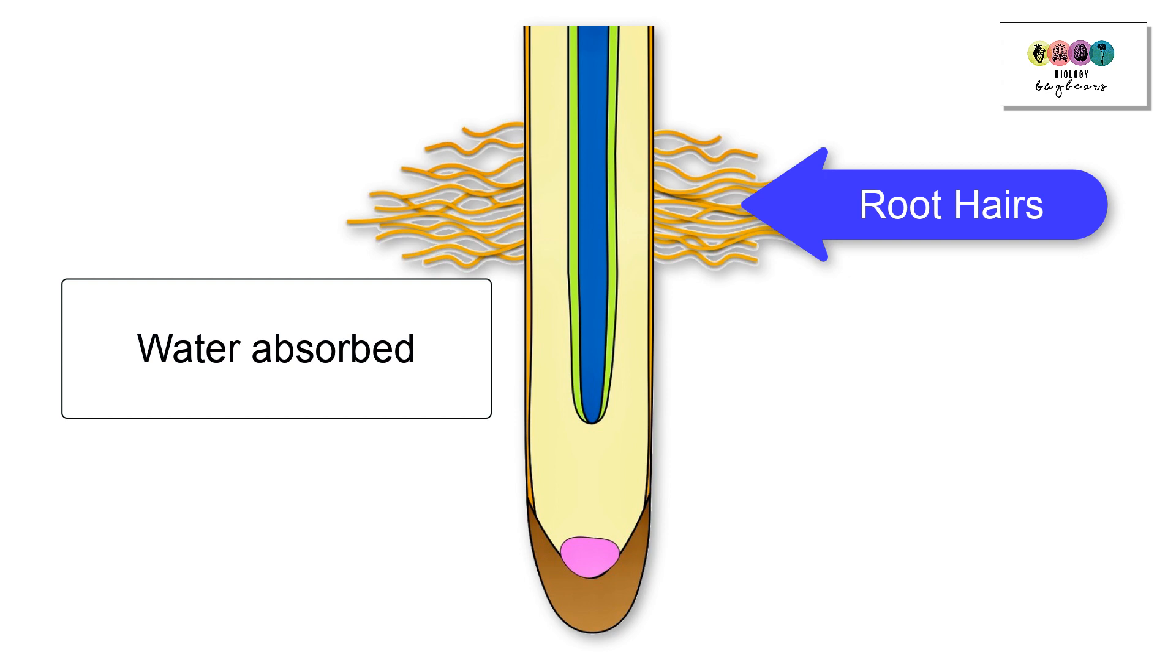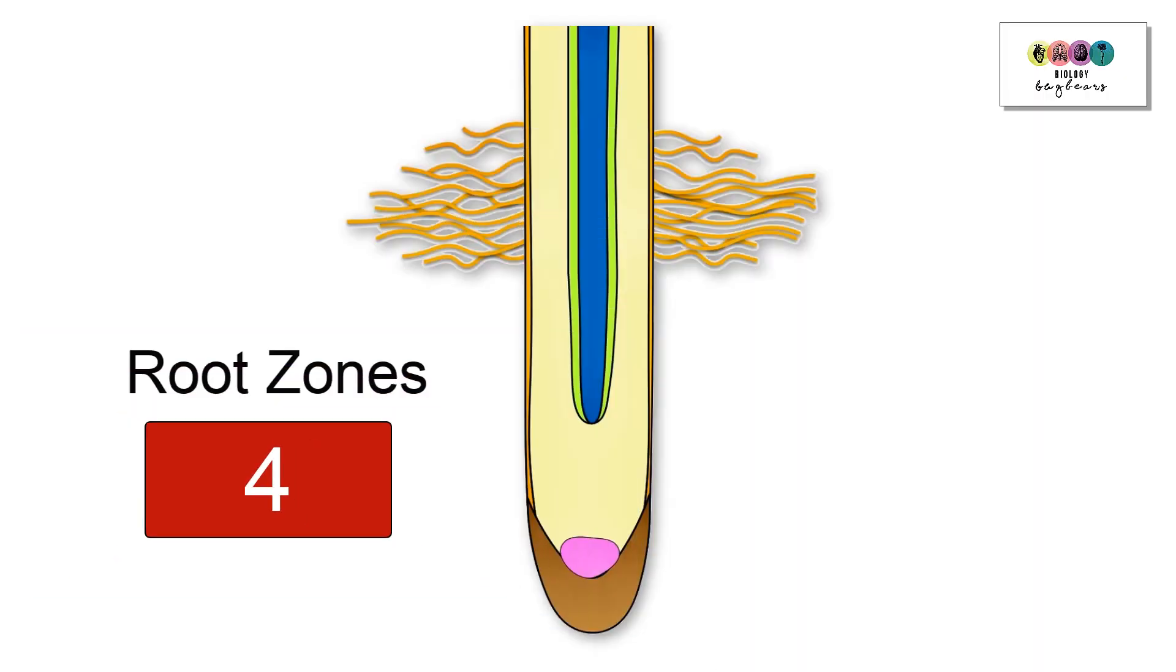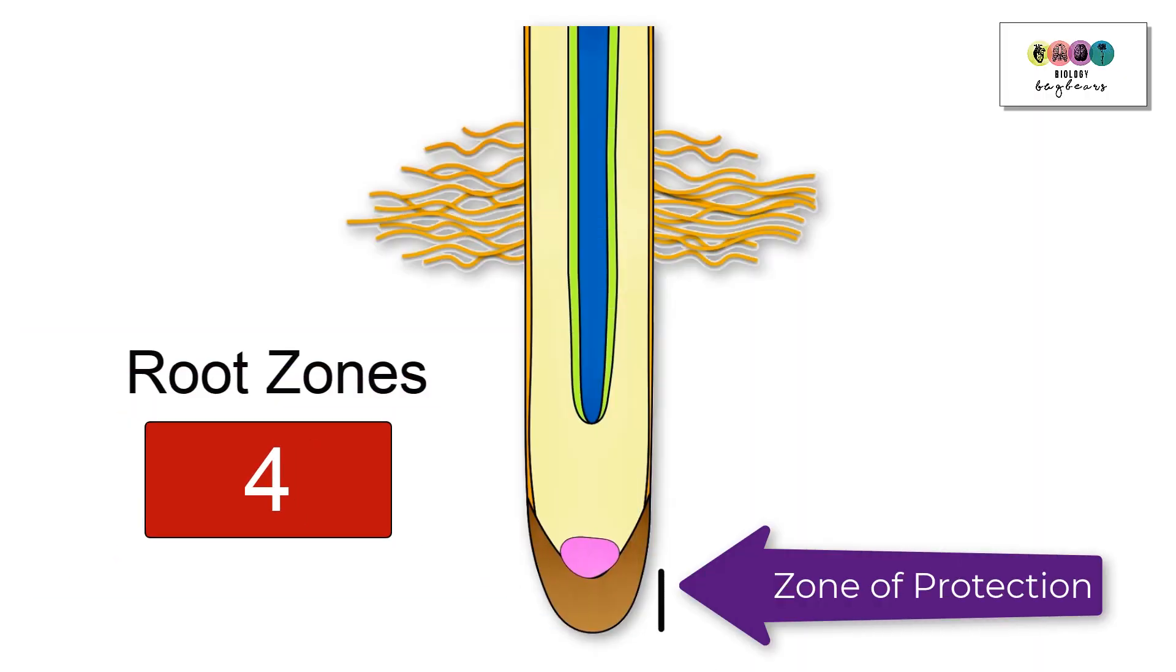Finally we have the root hairs, and this is where water is absorbed into the plant through the root hairs. Next, the root zones. The root is divided into four distinct zones. Firstly, the zone of protection, this is where you find the root cap.